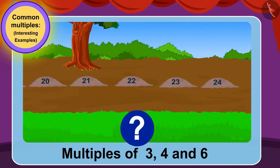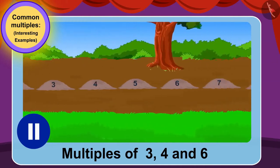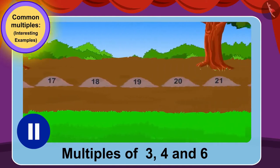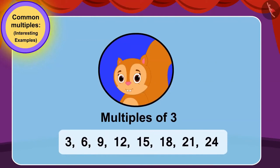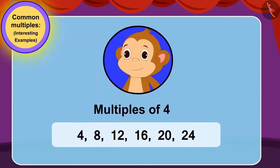We have to first find out which stones the three friends will jump on. We will find multiples of 3, 4 and 6 up to 24. Chanda will jump on 3, 6, 9, 12, 15, 18, 21 and 24. Babban will jump on 4, 8, 12, 16, 20 and 24.